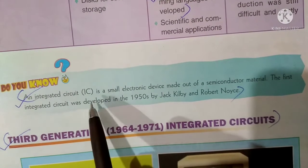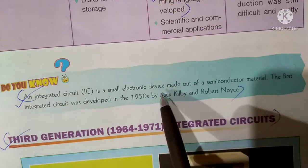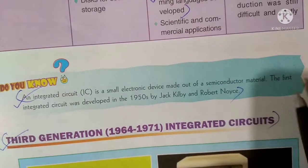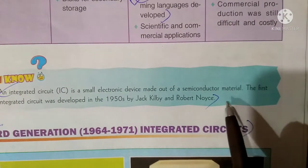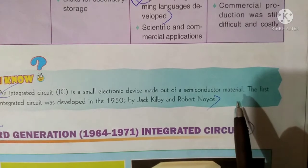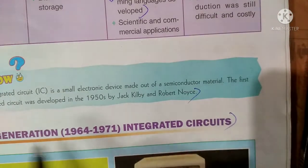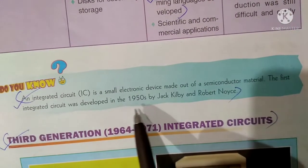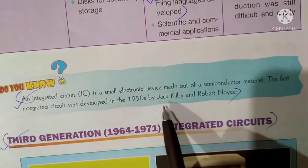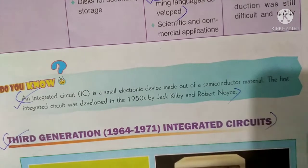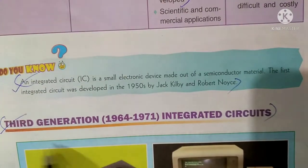Integrated Circuit (IC) is a small electronic device made out of semiconductor material. It can be understood as a modified form of transistor. The first integrated circuit was developed in 1958 by Jack Kilby and Robert Noyce. Third Generation computers used integrated circuits.